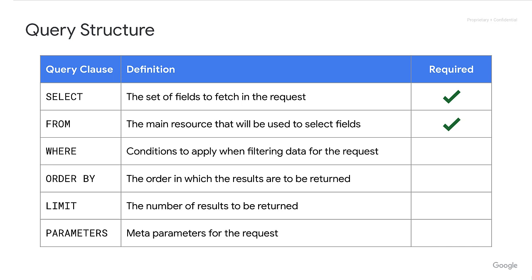Just to touch on this a little bit further: if you think about a report as a table, the select fields are the columns in the table. These are the fields that you'll get back, and only the fields that you request will be returned. The FROM clause is the resource you're selecting from, and both SELECT and FROM are required. None of the other clauses are required — filtering conditions, ordering, and limiting are all optional.